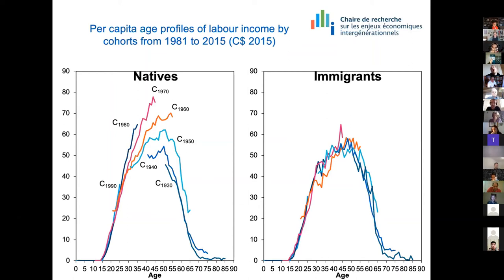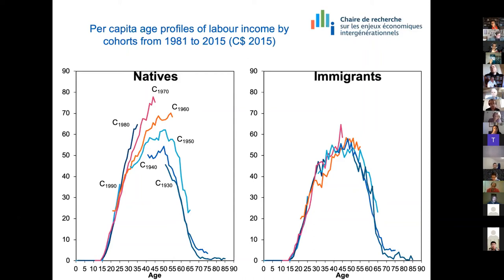We calculated all labor income between 1981 and 2015. This is really surprising: for natives it's quite basic — with economic growth, natives increase the labor income they generate. However, for immigrants over this 35-year period, labor income almost stagnated. So this stagnation is one of the main drivers of our results regarding public transfer outflows. It's really surprising because immigrants are more educated than natives, but they seem to suffer from either discrimination or at least a problem of recognition of their education degrees — particularly well-known for immigrants from the Middle East who are doctors driving Uber.